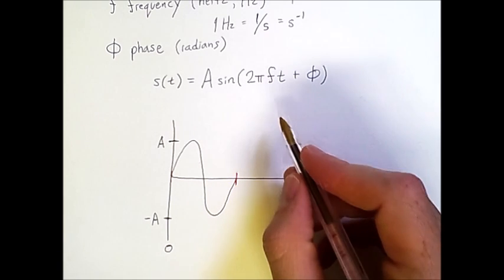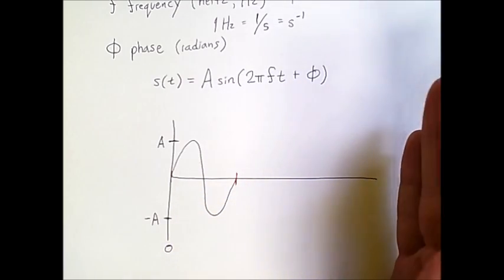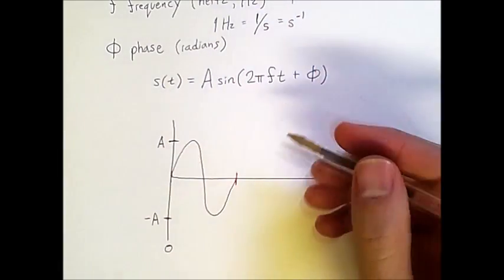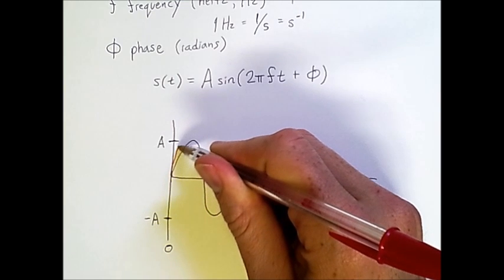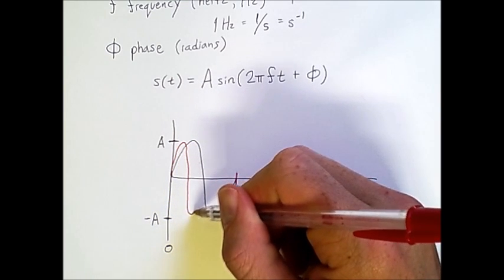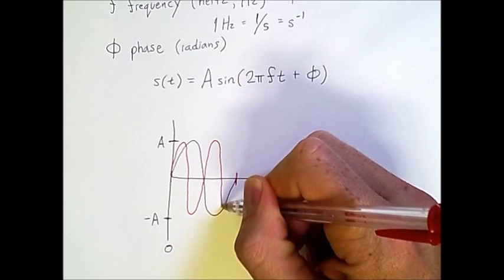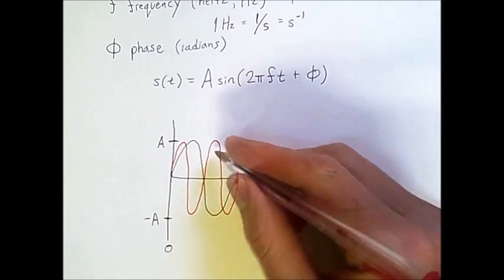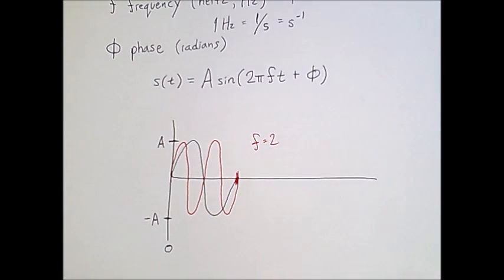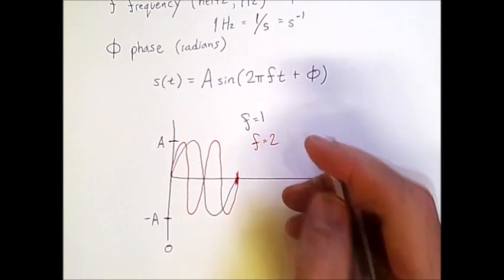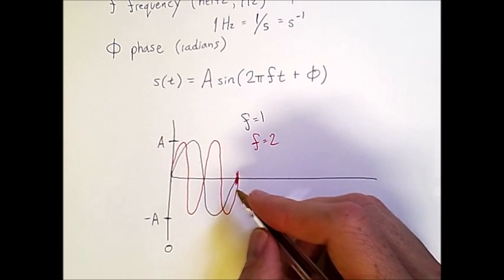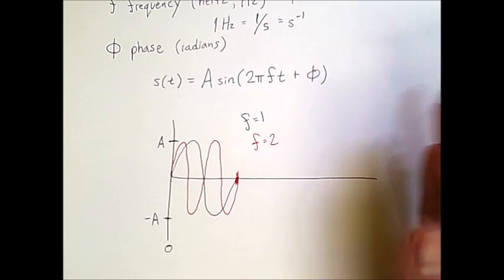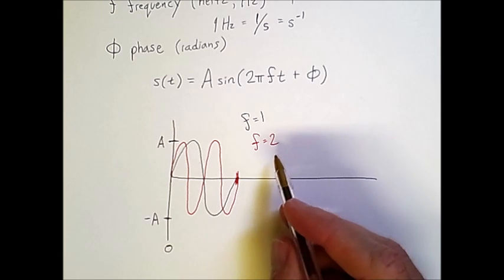But if I set the frequency to two, twice as much, then that is like I'm squeezing the wave down. And so instead of having only one up and one down within this period, I would have an up and a down and an up and a down within a single period. So this red line corresponds to a frequency of two, whereas the original was for a frequency of one. And if I were to make the frequency smaller, it would stretch the wave out and I would have less than a full wave within one period. So increasing the frequency compresses the wave this way and decreasing the frequency stretches it out.